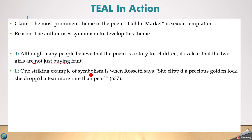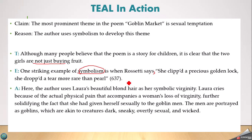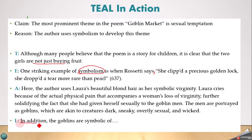The topic sentence reads: 'Although many people believe that the story is just for children, it's clear that the two girls are not just buying fruit.' Using the word 'symbolism' to connect to the reason, the writer cites: 'She clipped a precious golden lock, she dropped a tear more rare than pearl.' Here the author uses Laura's beautiful blonde hair as her symbolic virginity. Laura cries because of the actual physical pain that accompanies a woman's loss of virginity. The men are portrayed as goblins — dark, sneaky, overtly sexual, and wicked — which links to the next symbol.